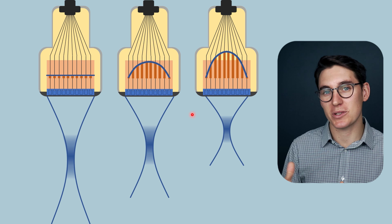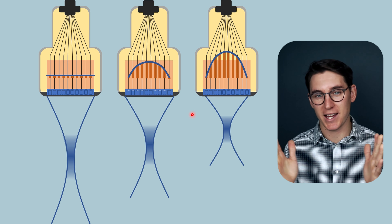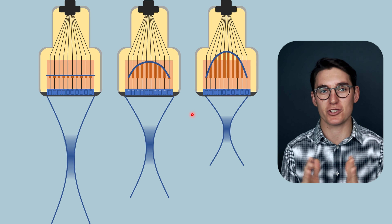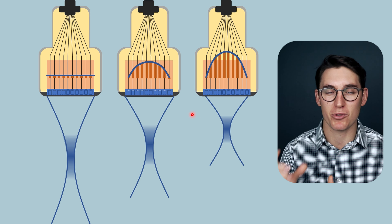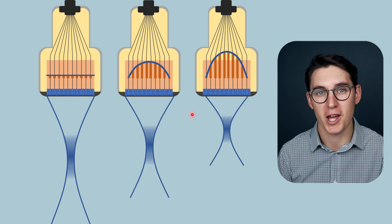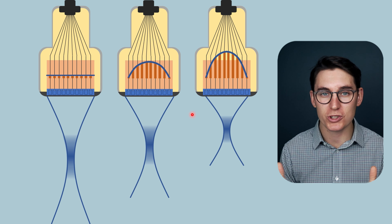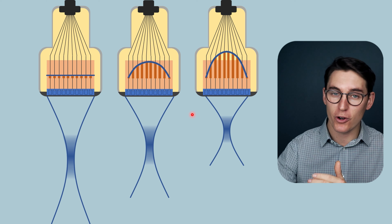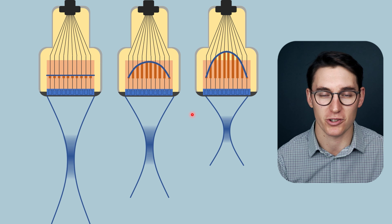So not only do the frequency and diameter of the transducer elements change the depth of the focal zone, but these four mechanisms can also be used to further manipulate focal depth.